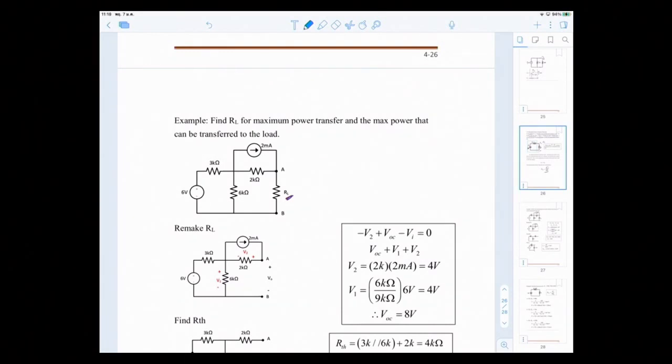To find RTH for this circuit, first we remove RL, so we have open circuit for AB. We short the 6V voltage source and then we open the current source. This becomes your circuit to find R total, which is R Thevenin, which will become 3K parallel with 6K and in series with 2K ohm. Therefore, the answer is 4K ohm. So your RTH is equal to 4K ohms.